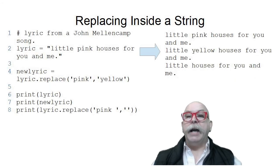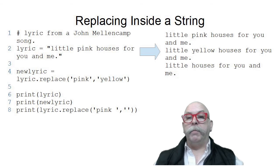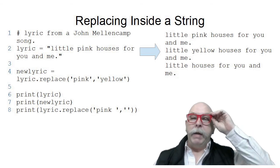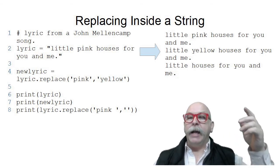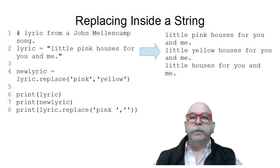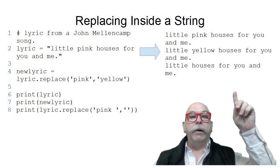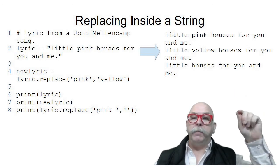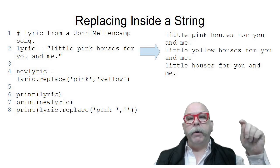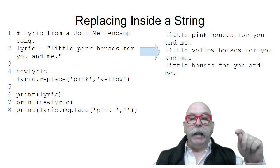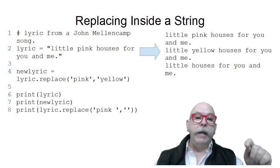You can see I used a song lyric from an old John Cougar Mellencamp song, Little Pink Houses for You and Me. And then on line four, you can see I changed the color of the houses from pink to yellow. And you can see it says now, Little Yellow Houses for You and Me.